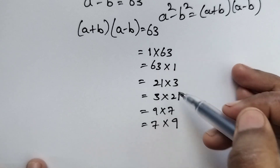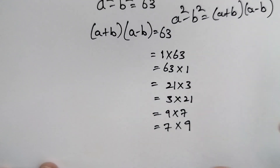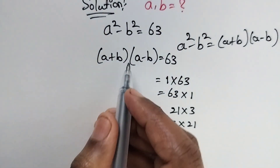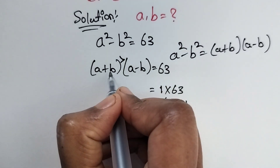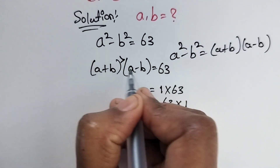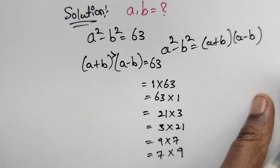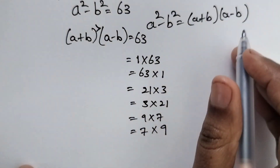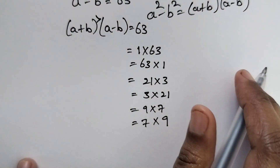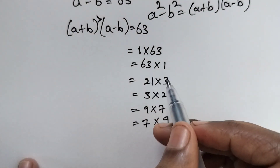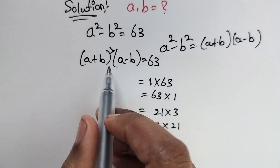These are the possible factor pairs. Now, it must be that a plus b is greater than a minus b. We have to check which of these factor pairs satisfy this condition.